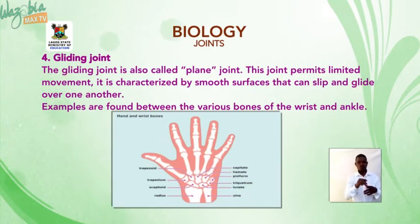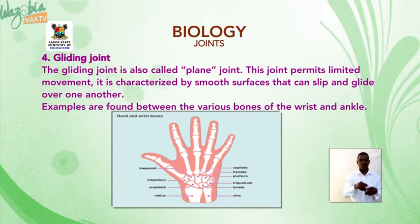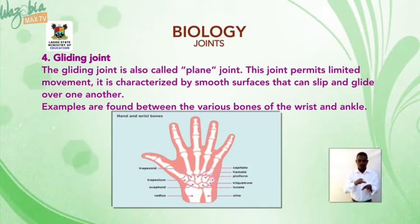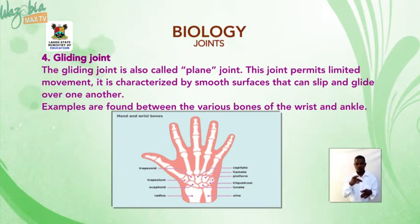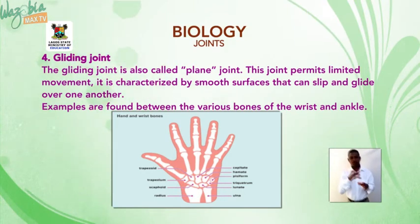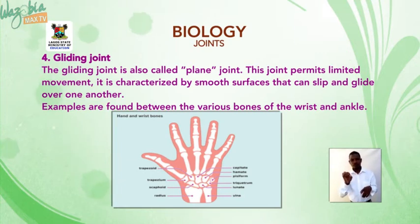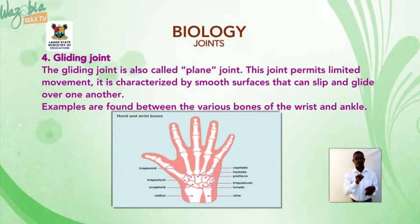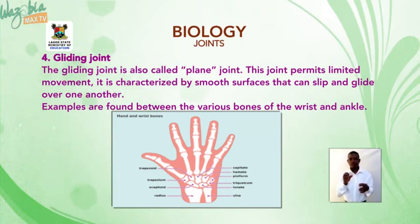The gliding joint, also called the plane joint, permits limited movements. It is characterized by smooth surfaces that can slip or glide over one another. Examples are found between the various bones of the wrist and ankle.